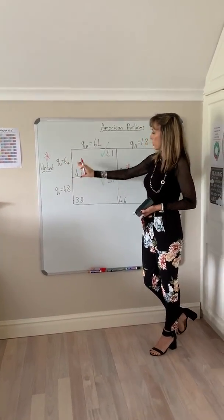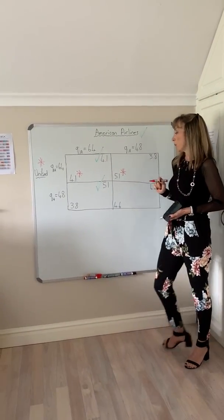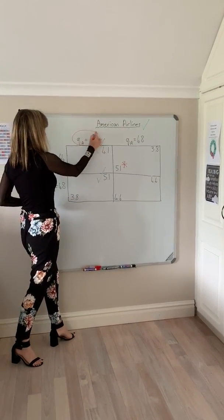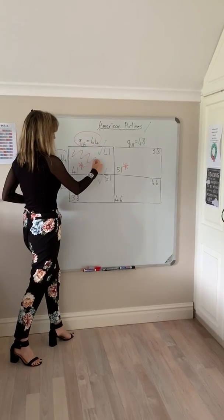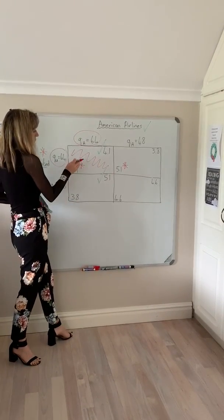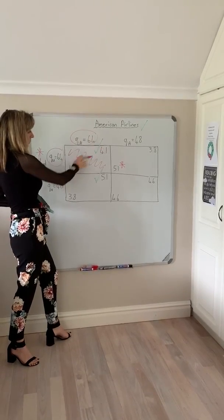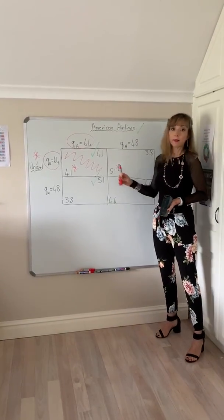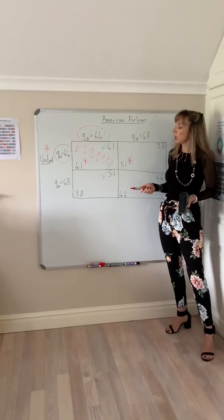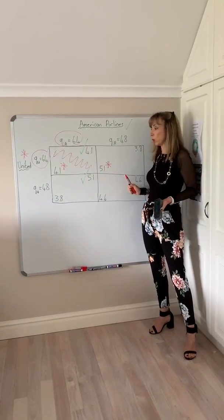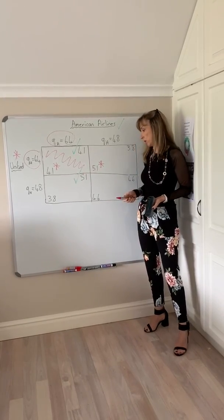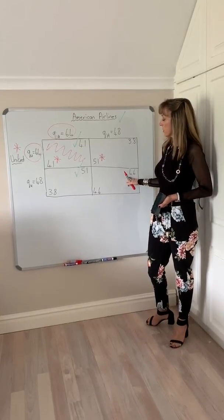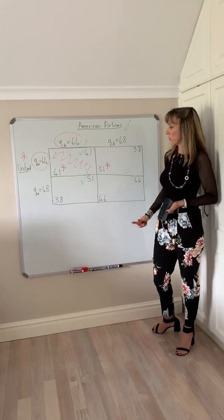So both firms therefore follow their dominant strategy of a higher output, and we end up in a Nash equilibrium where both firms are producing the high output and we're in this quadrant. Is this the best that they can do? Well it is, given that there's uncertainty and they don't trust each other. But it actually isn't the greatest joint profits they could potentially achieve — there is a quadrant where they could both increase their profits, both earning 4.6 million as opposed to 4.1.